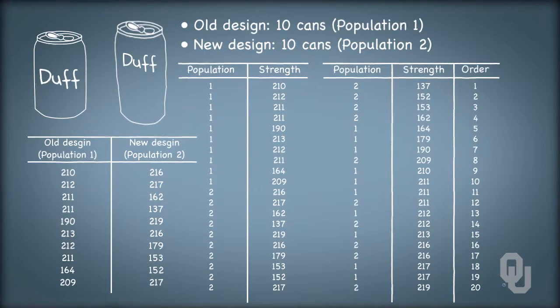Then we order all twenty from smallest to largest. The smallest bursting strength observation, 137 PSI, belonging to a can from the new design, population two, has rank one. And the largest strength, 219 PSI, also from population two, has rank twenty.